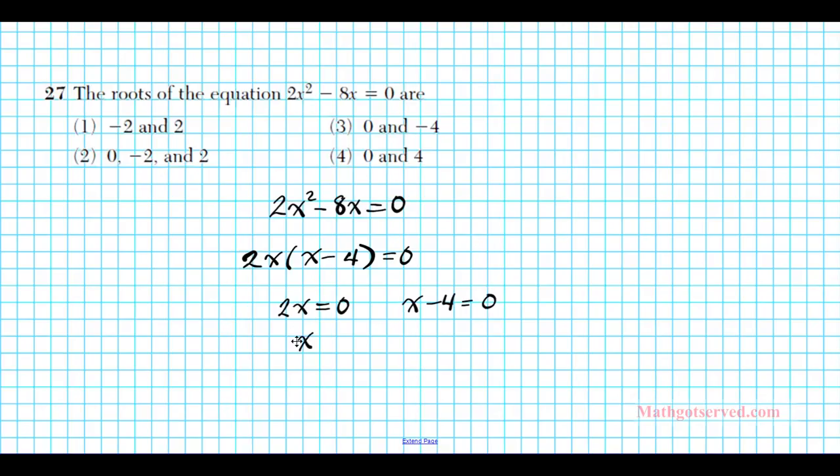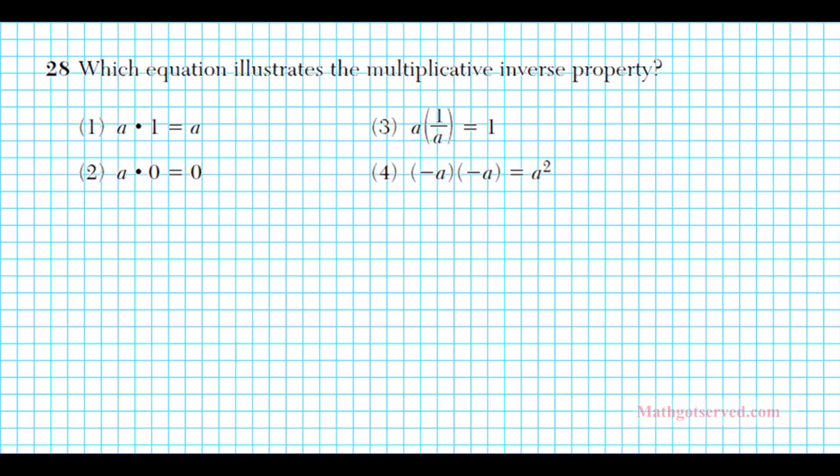And using the zero product property, we have 2x is equal to 0 and x minus 4 is equal to 0. Solve this by dividing both sides by 2, you have x equals 0. And in this you add 4 to both sides and you have x equals positive 4. So our roots are 0 and positive 4. And you can see that our answer is clearly option number 4. Another way to do this is, ask yourself, which numbers do you plug into this equation to get 0? And those would be the roots of your equation.